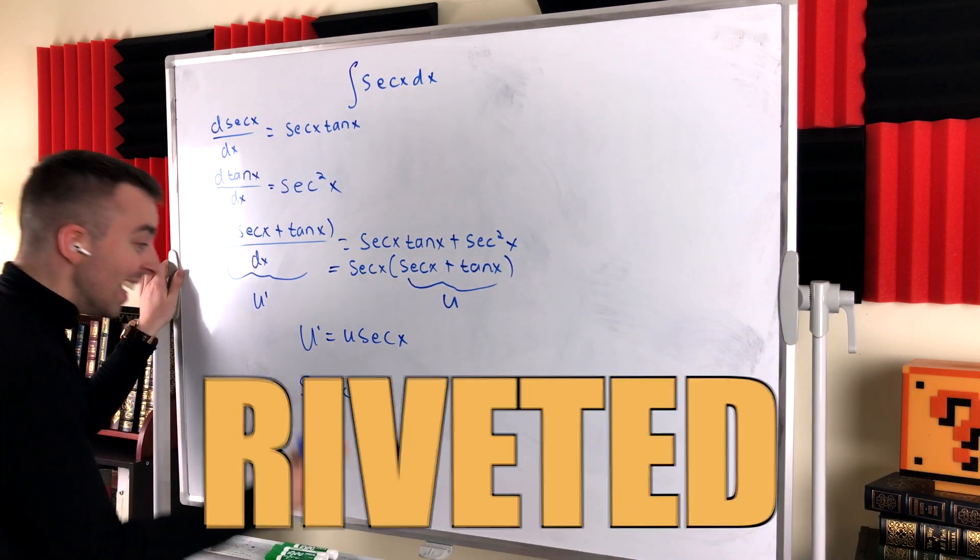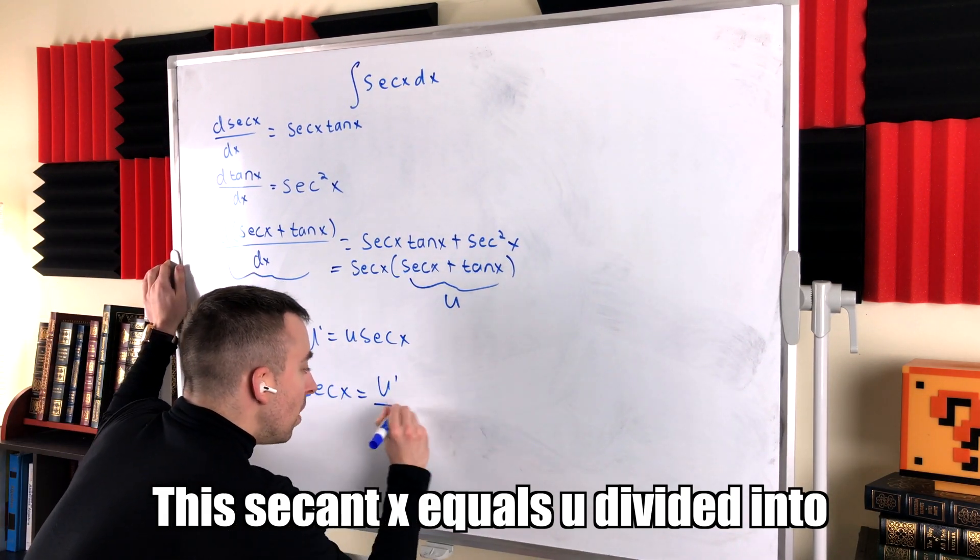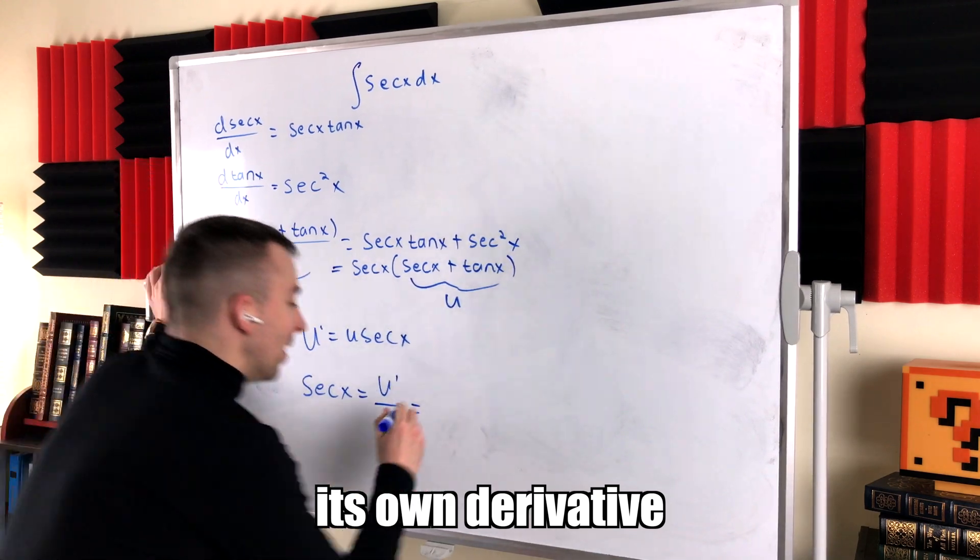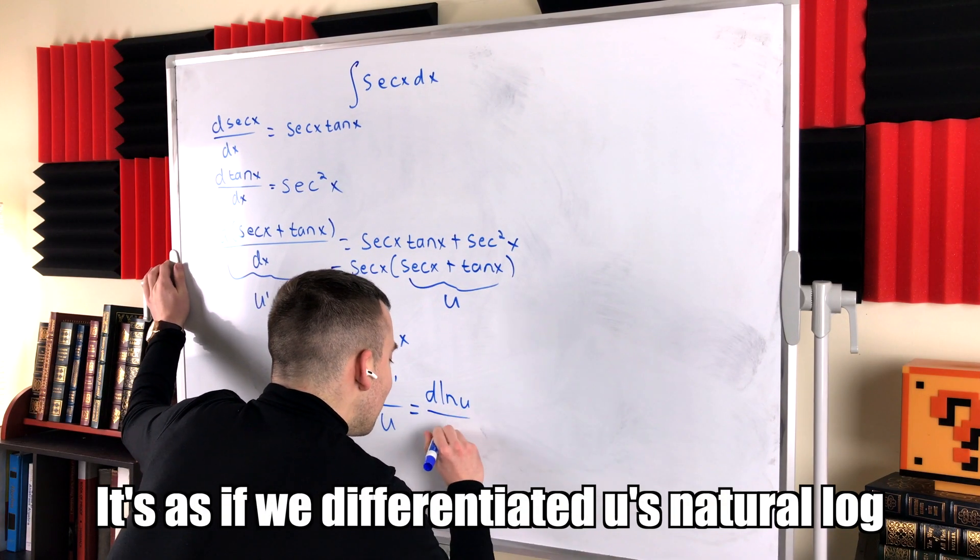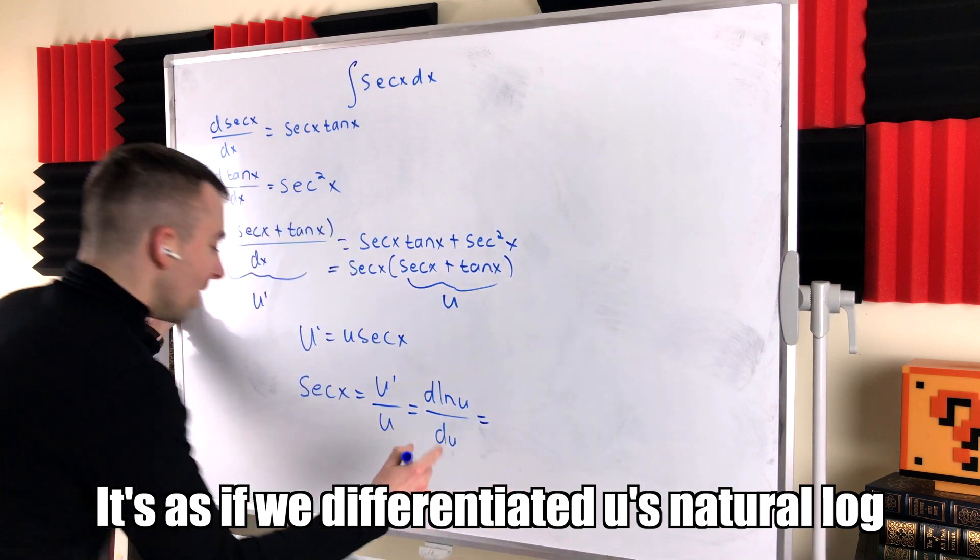My rhymes leave you riveted. This secant x equals u divided into its own derivative. That's indicative. Begin to clear away the fog. It's as if we differentiated u's natural log.